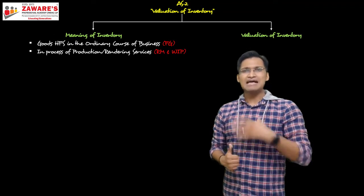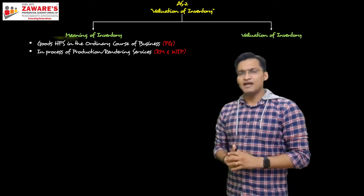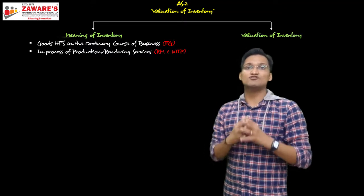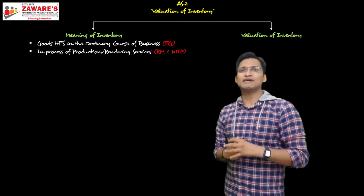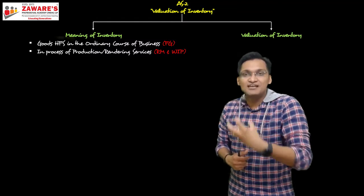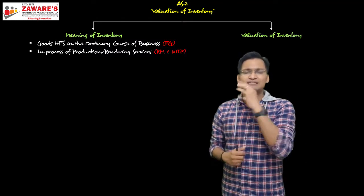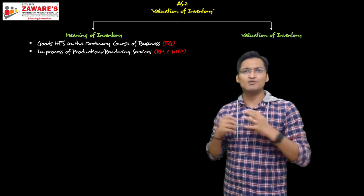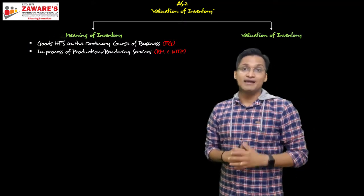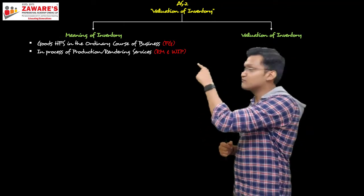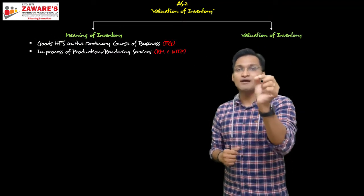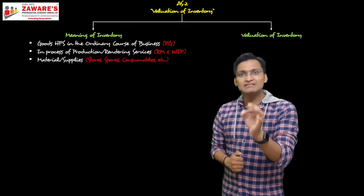For rendering services: as a teacher in a service industry, I need to maintain stock of microphone batteries and papers — these are all consumables I use while rendering my service. A practicing chartered accountant needs stationery items, printer toner, papers, and many other things in their office — they need to maintain stock of all of these. That is their inventory. So inventory includes: goods held for sale, goods in the process of production or rendering services (i.e., raw material and WIP), and materials and supplies.